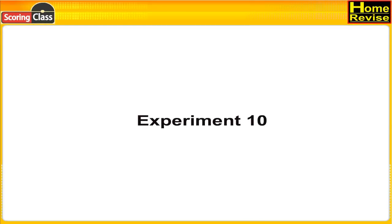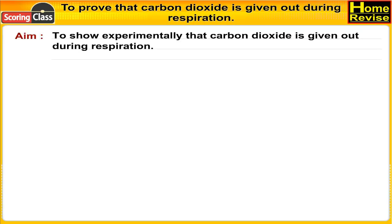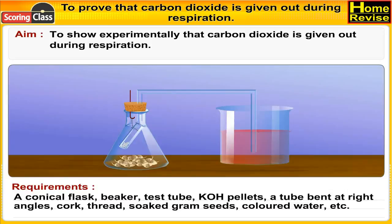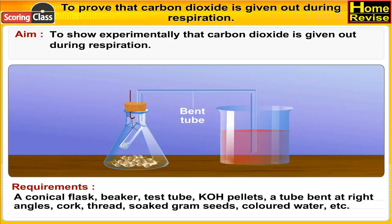Experiment 10: To prove that carbon dioxide is given out during respiration. Aim: To show experimentally that carbon dioxide is given out during respiration. Requirements: a conical flask, beaker, test tube, KOH pellets, a tube bent at right angles, cock.